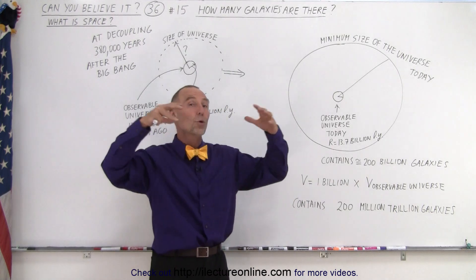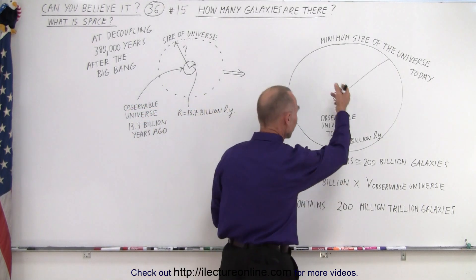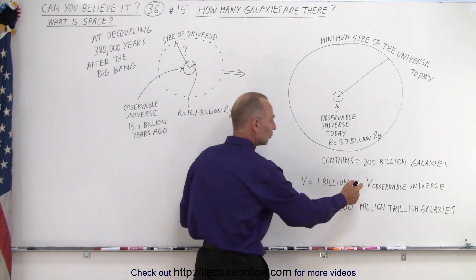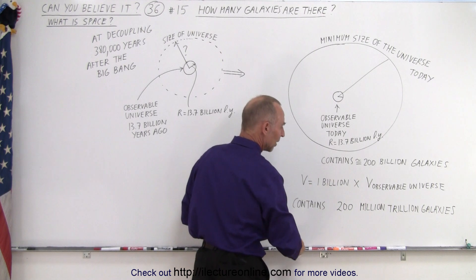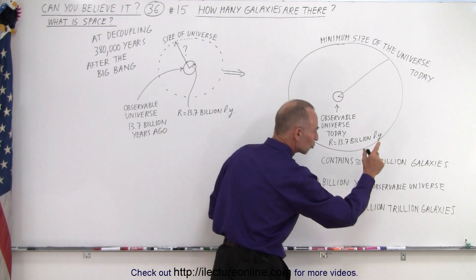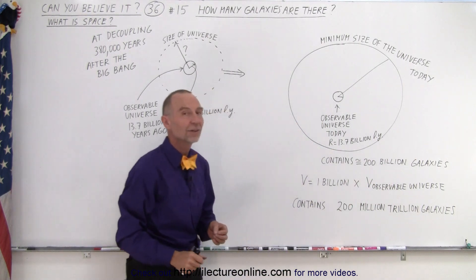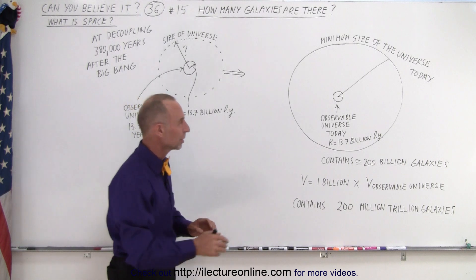But since the total universe is at least a billion times the volume of our observable universe, we take 200 billion and multiply it times a billion, and so now we have at least 200 million trillion galaxies in our universe. 200 million trillion.